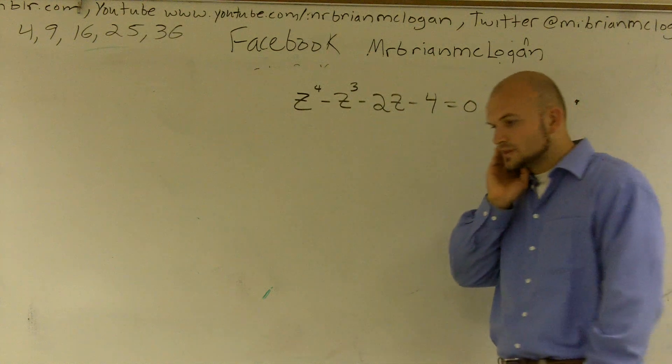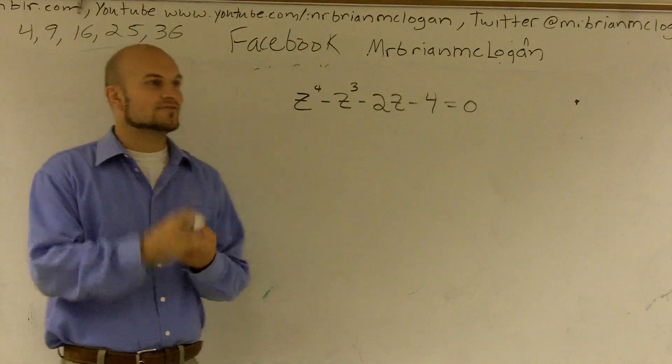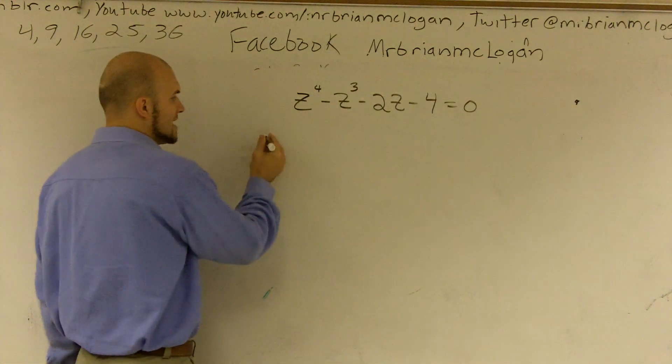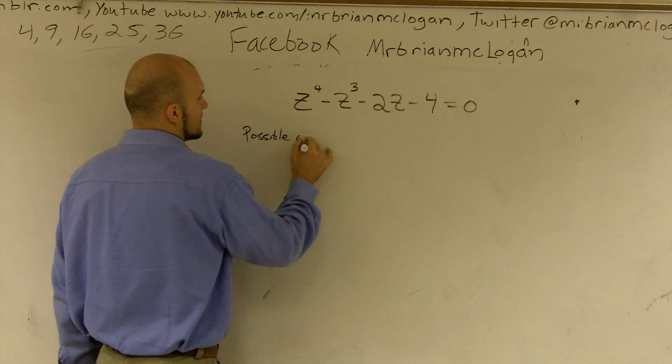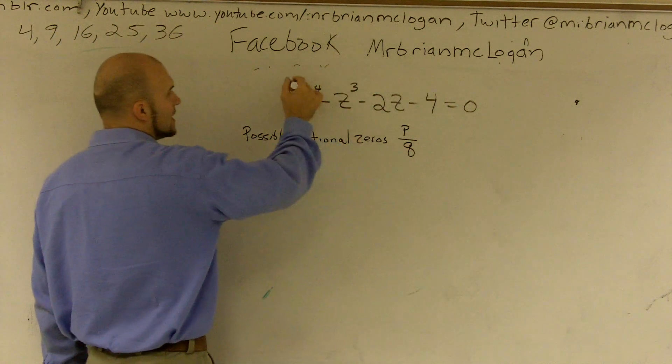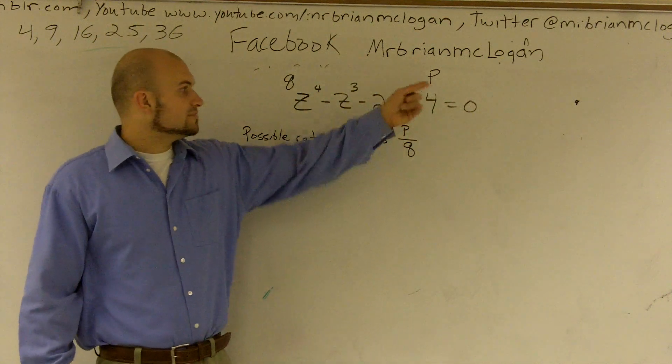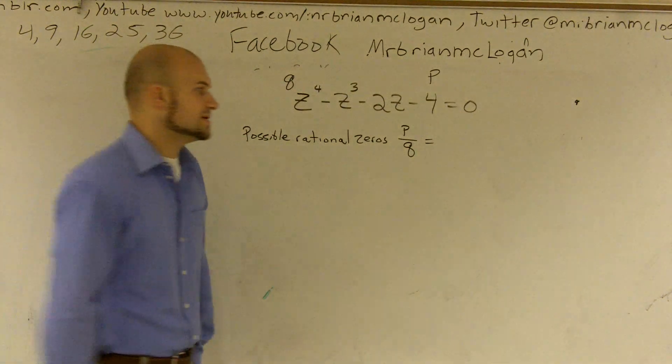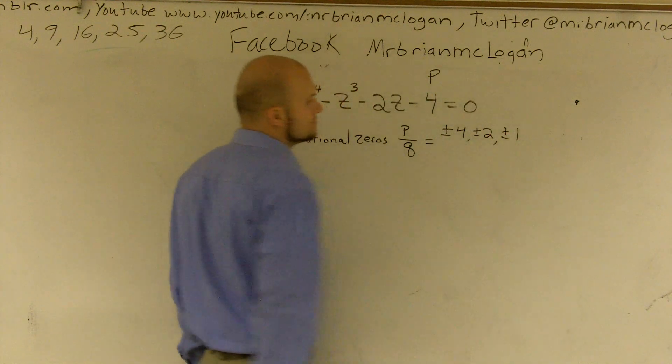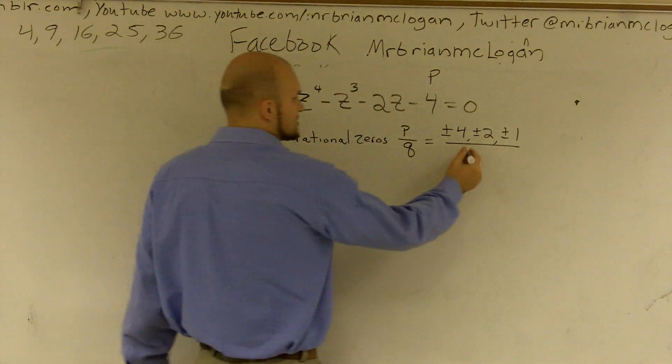The next thing that we learned is there's a rational zero test. What the rational zero test tells us is all of my rational zeros are possible rational zeros p over q, where my coefficient is q and my constant term is p. So I look at what are all the factors of my p. That's going to be plus or minus 4, plus or minus 2, and plus or minus 1. Then I look at my q. Thankfully, q is pretty good because it's just going to be plus or minus 1.